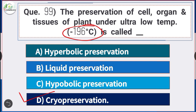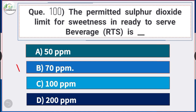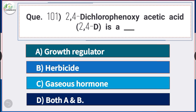Question number 100: The permitted sulfur dioxide limit for sweetness in ready-to-serve beverage is — answer option B — 70 ppm. Question number 101: 2,4-Dichlorophenoxyacetic acid (2,4-D) is — answer option D — both A and B — 2,4-D is both a growth regulator and is also used as a herbicide.